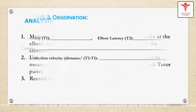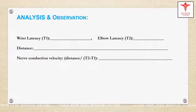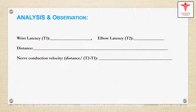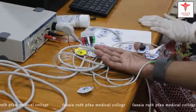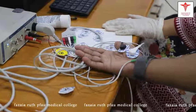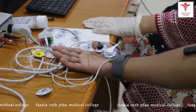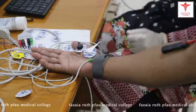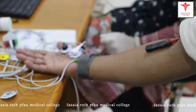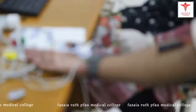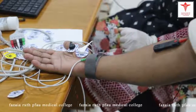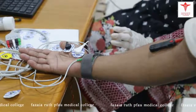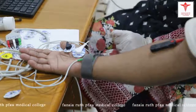This is how you are going to analyze and do the observation. Now students, we are going to measure the responses evoked by the nerve stimulation at the elbow. The latency of these responses is longer than those evoked by stimulation at the wrist. By this, you will be able to calculate the nerve conduction velocity from the difference in the latencies.